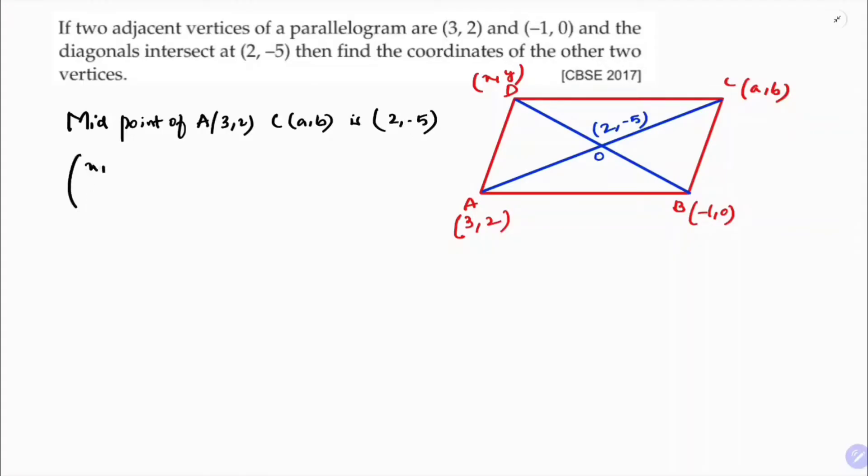The midpoint formula is (x₁+x₂)/2, (y₁+y₂)/2 equals (2,-5). Because in a parallelogram diagonals bisect each other, where the diagonals meet they bisect each other at that point. So midpoint of AC is (2,-5) and midpoint of BD is also (2,-5). Now if I substitute the values here.